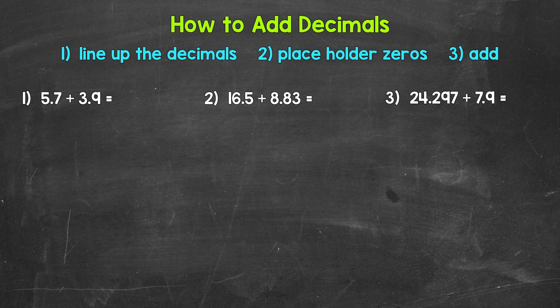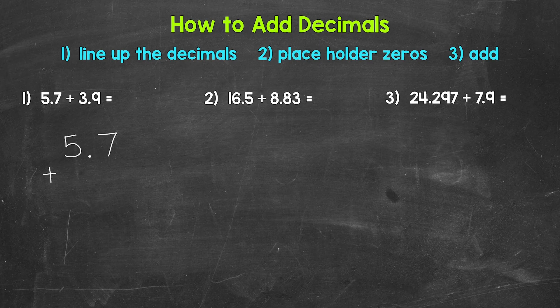Let's jump into number one, where we have five and seven-tenths plus three and nine-tenths. Now our first step when adding decimals is to line up the decimals. So we're going to set this problem up by lining up the decimals — five and seven-tenths plus three and nine-tenths. You can see that those decimals are lined up, and that lines up all of the places: the ones place and the tenths place.